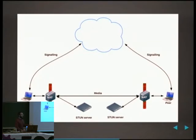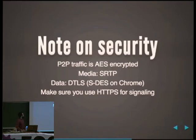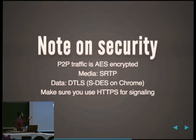If the NAT traversal works, they basically do the signaling and then connect through NAT to each other. If they can't connect through the NAT, they send all the packages through the relay server. By default, everything you send through the peer-to-peer channel in WebRTC is encrypted — it uses SRTP for video and audio, and DTLS for data. You also have to make sure the signaling is done through a secure channel, and that way you're almost fully covered.